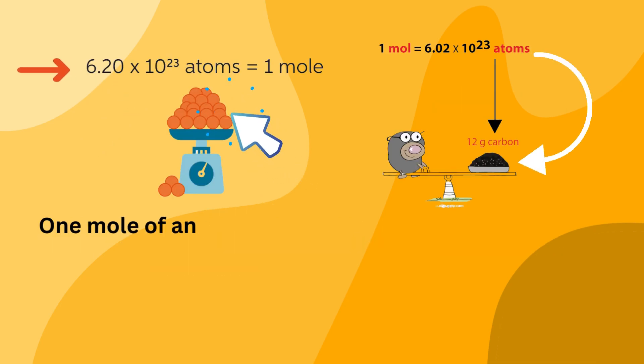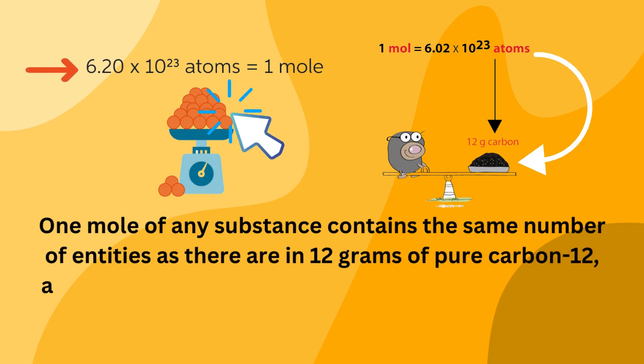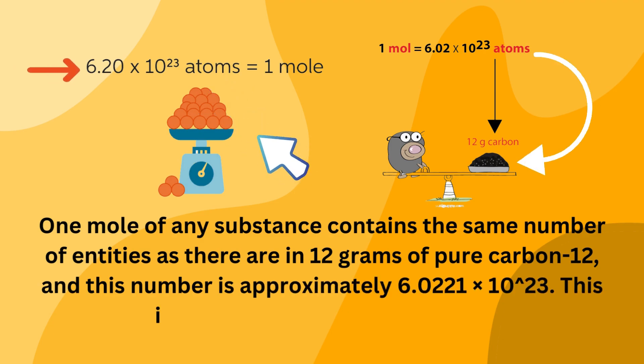One mole of any substance contains the same number of entities as there are in 12 grams of pure carbon-12. And this number is approximately 6.0221 times 10 to the 23. This is known as Avogadro's number.